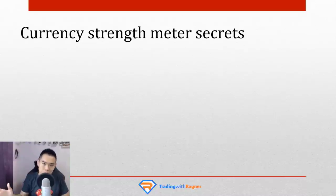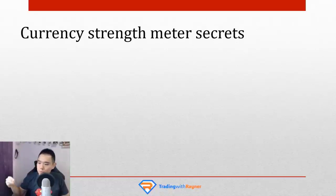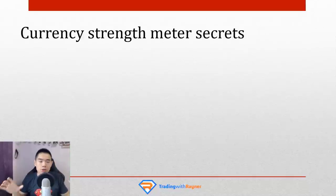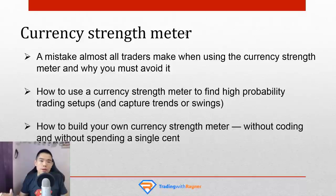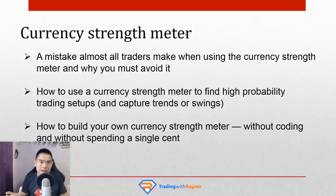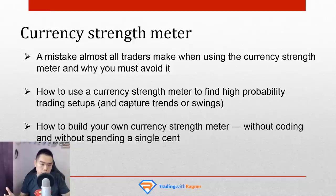The euro/pound, the euro/yen, the euro/whatever — this is where a currency strength meter comes into play. It makes your life easier to help you nail down the right currency pairs to trade, depending on whether you want to ride a trend or capture a swing. In today's video, here's what you'll learn: number one, a mistake almost all traders make when using the currency strength meter and why you must avoid it. Number two, how to use a currency strength meter to find high-probability trading setups, whether you want to ride a trend or capture a swing.